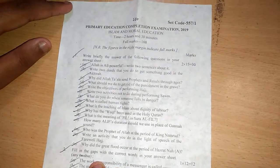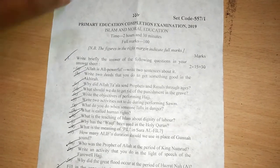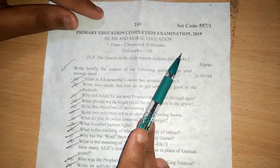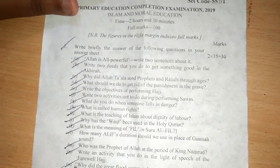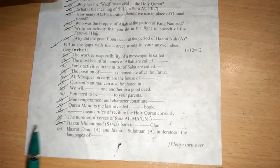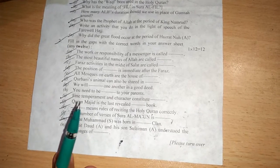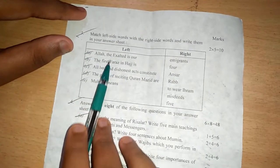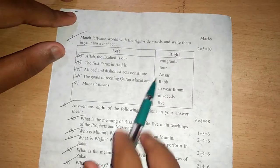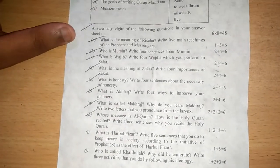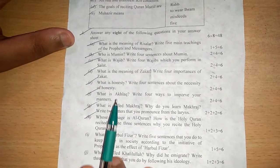Now I'll show you the Islam and moral education. This is for the Muslim students. This is the questions of the primary education PSC of 2019. Number one, there are 15 short questions. We have to give all the answers of all the short questions. And in number two, there are 14 fill in the blanks and we have to give any twelve, each contains one mark. Now I'm showing you the questions again.